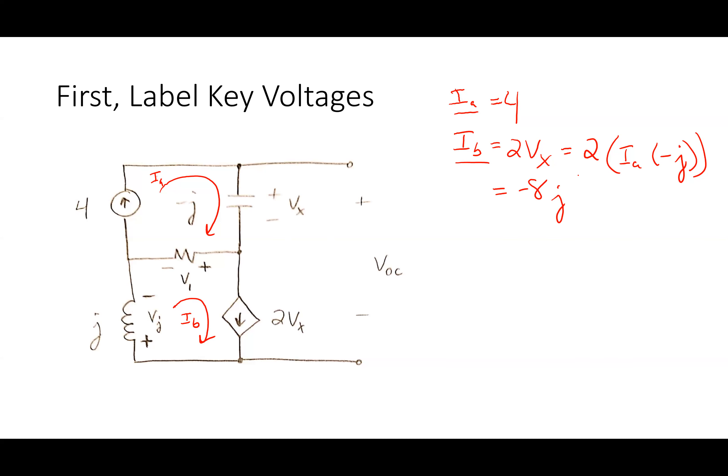If I put -8j in magnitude-angle form: the magnitude is 8, and the angle is -90 degrees, because -j points straight down on the complex plane. So Ib = 8∠-90°. But that still doesn't give me Voc directly.